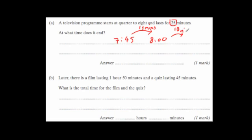So the time would be 10 past eight. Let's check: 15 minutes to get to eight o'clock, and another 10 minutes would be 10 past eight, meaning the program has lasted 25 minutes in total. The program ends at eight ten — you could write that as 10 past eight. We don't know if it's a.m. or p.m. though.